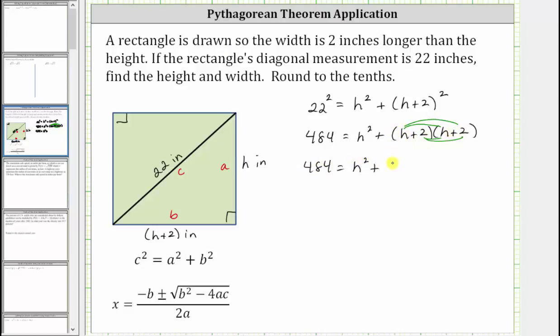h times h is h squared, so we have plus h squared, plus h times two is two h. But notice how the next product is two times h, which is also two h, giving us plus four h, and then plus two times two, which gives us plus four.